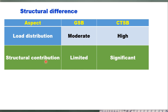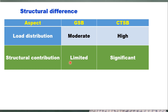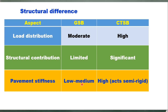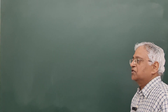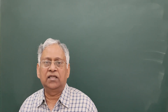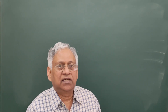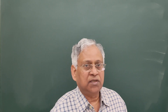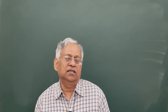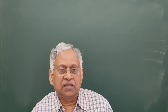The GSB layer contributes very limited structural capacity to the pavement, whereas in the case of CTSB the contribution is quite significant. Pavement stiffness with GSB is low to medium, whereas with CTSB it is high, and the CTSB layer acts as a semi-rigid or semi-flexible layer. Construction of a GSB layer is quite easy, but for CTSB you require better quality control and a curing time of 3 to 7 days before placing the next layer. The cost of GSB is naturally low and it is higher for CTSB because of the added cementitious material.